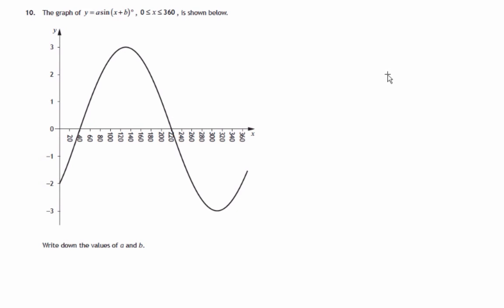This is question 10 from paper 1 in the 2014 National 5 Maths exam. We're given a sine graph. It doesn't just come up to 1 and go down to negative 1 as the normal sine graph does. It goes up to 3 and down to negative 3. And you'll notice it's been shifted to the right by 40 degrees. And we're asked to find the values of A and B.